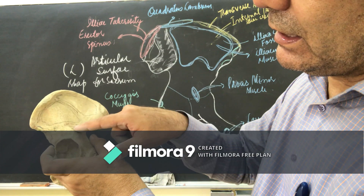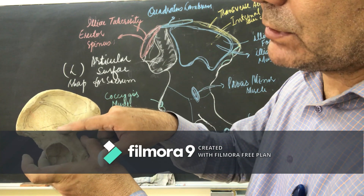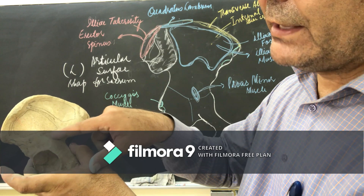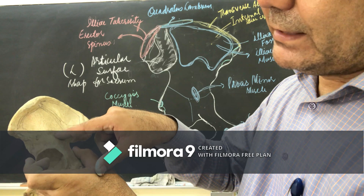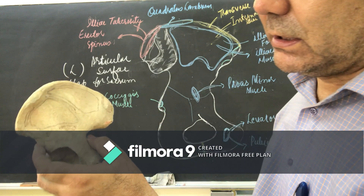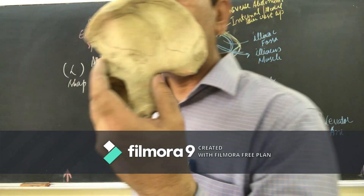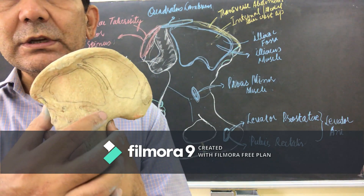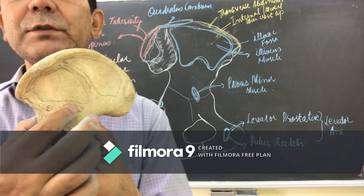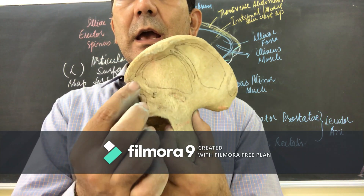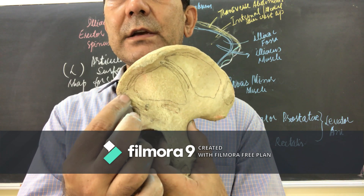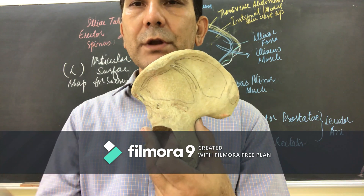Just above the acetabulum cavity, below the inferior gluteal line, this surface area along with the posterior inferior iliac spine region is for the attachment of the rectus femoris muscle. The anterior superior iliac spine area is for the attachment of the sartorius muscle.